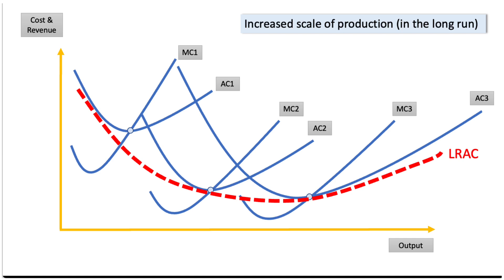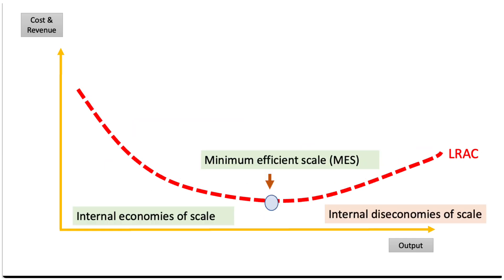When the average cost is falling — for example, as we move from MC1, AC1 to MC2, AC2 — we have economies of scale. But at very high levels of output, the average cost may start to rise; that's diseconomies of scale. So when the long-run average cost is declining, we have internal economies of scale — cost advantages from the growth of the business itself — until you reach the low point of LRAC, which is also known as minimum efficient scale. Beyond that, you may be getting internal diseconomies of scale caused by decreasing returns to scale, where the firm has moved beyond its optimum size.